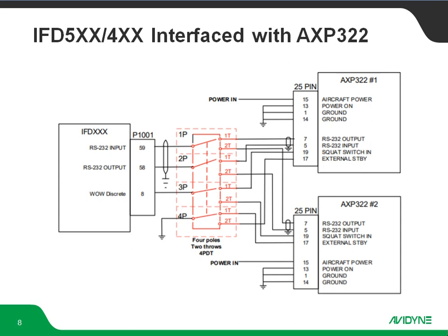This drawing is showing the addition of a four-pole two-throw switch or relay. The point here is if you've got a single IFD driving dual transponders from a single IFD, you're going to need to add this. The top two poles are just swapping the RS-232 inputs and outputs from the IFD. This third pole is your pseudo weight on wheels discrete coming from the IFD.